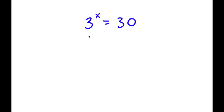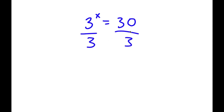In this problem, I have 3 to the power of x is equal to 30. To solve this problem, I'm going to first start by dividing both sides by 3. So now I have 3 to the power of x over 3 is equal to 30 divided by 3, which equals 10.